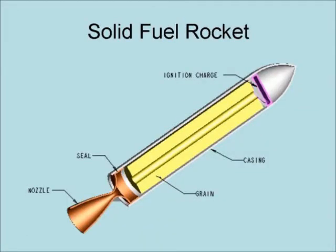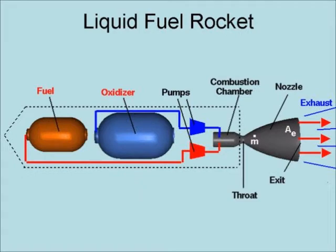Solid fuel rockets are rockets in which the fuel and oxidizer are mixed together in a solid grain. This is the simplest type of rocket since it requires no moving parts. However, once lit, they cannot be shut down and have to be allowed to burn out. Control of the burn comes only from how the grain is packed.